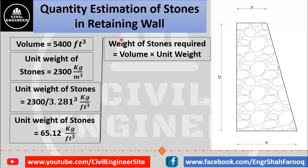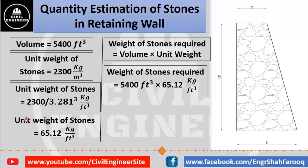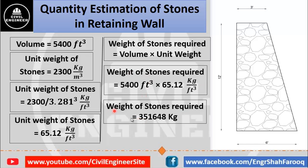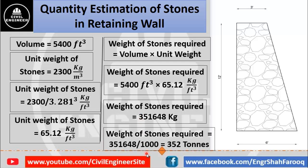To calculate the weight of stone required, multiply volume by unit weight. Volume is 5400 cubic feet and unit weight of stone is 65.12 kilogram per cubic feet. Putting values in the equation: weight = 5400 × 65.12. The cubic feet units cancel and we get the weight of stone required as 351,648 kilograms. Converting to tons — since 1 ton equals 1000 kilograms — divide by 1000, giving a weight of approximately 352 tons.